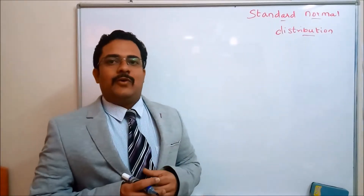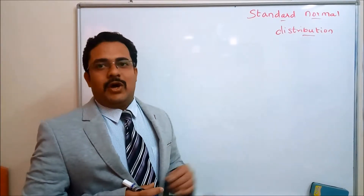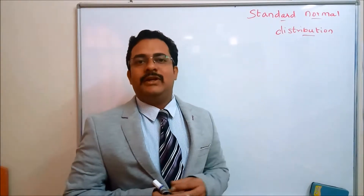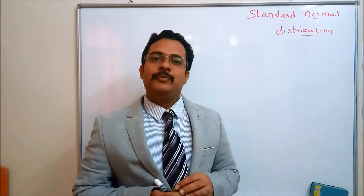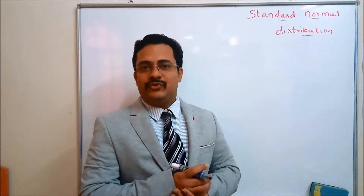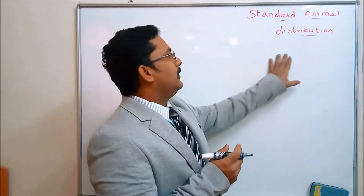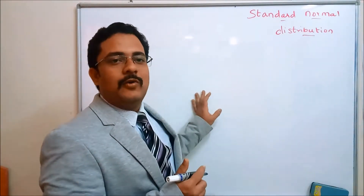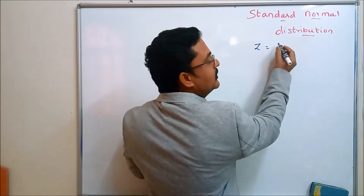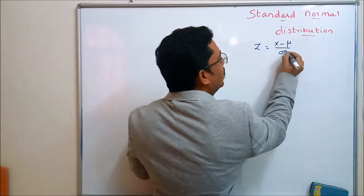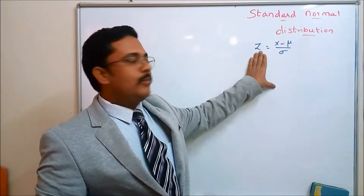In our earlier lectures, we have enough introduction and calculations about the normal distribution in order to calculate the area, the probability, and the correlations among these two using the standard normal distribution. We need this lecture. Let me go back to the rule directly. Let's recall the rule you studied in the earlier class: the normal variate Z is equal to X minus Mu divided by Sigma. This is a normal variate.